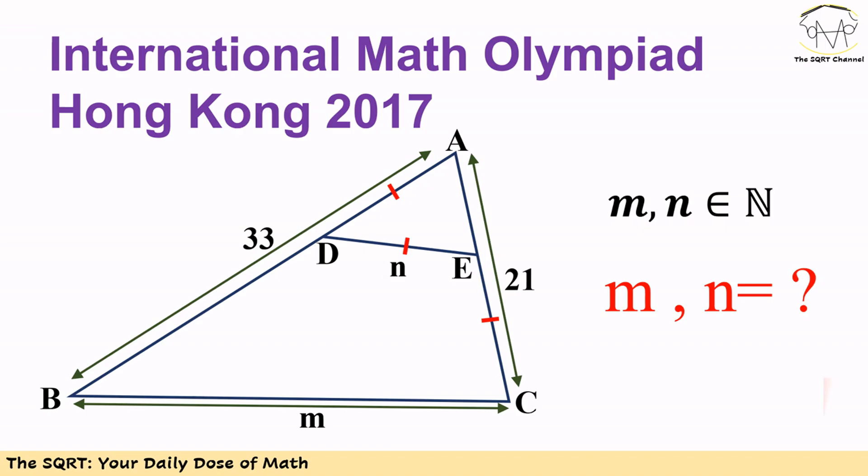Hello everyone, in this video we are going to talk about another problem from International Mathematics Olympiad Hong Kong 2017. In this geometry problem we have triangle ABC and we know AB is equal to 33, AC is equal to 21, and we use M for BC.